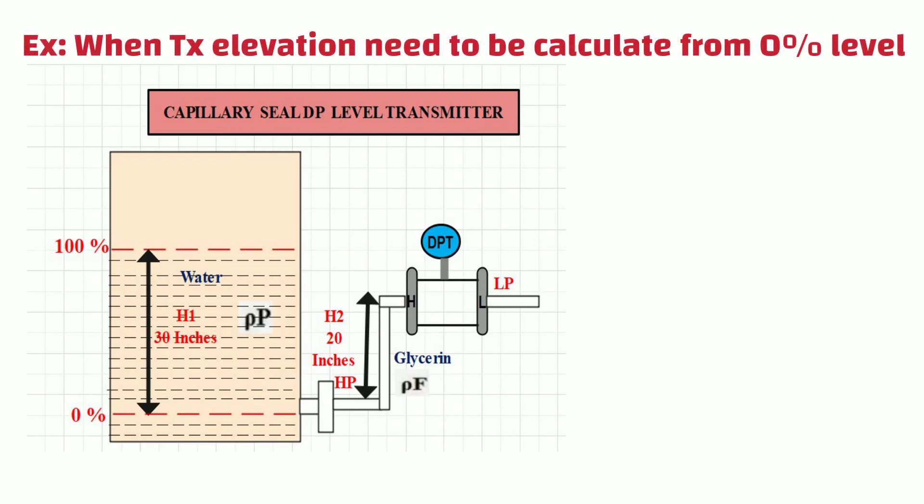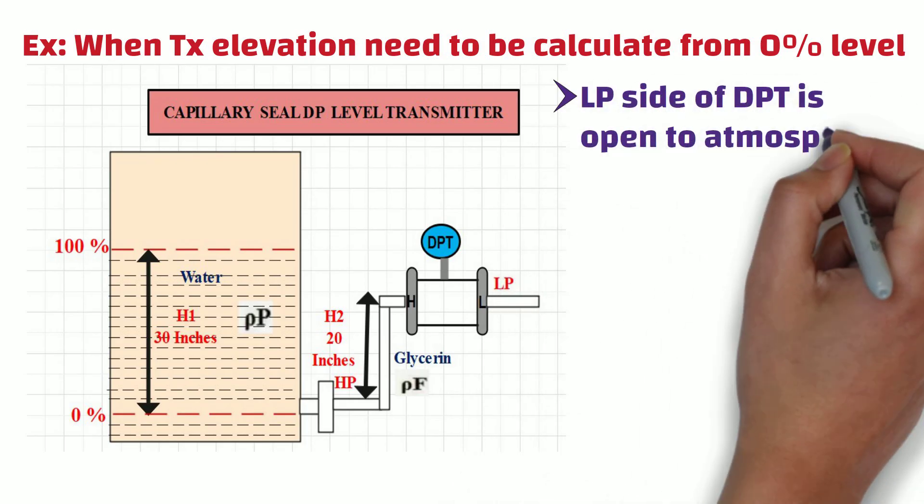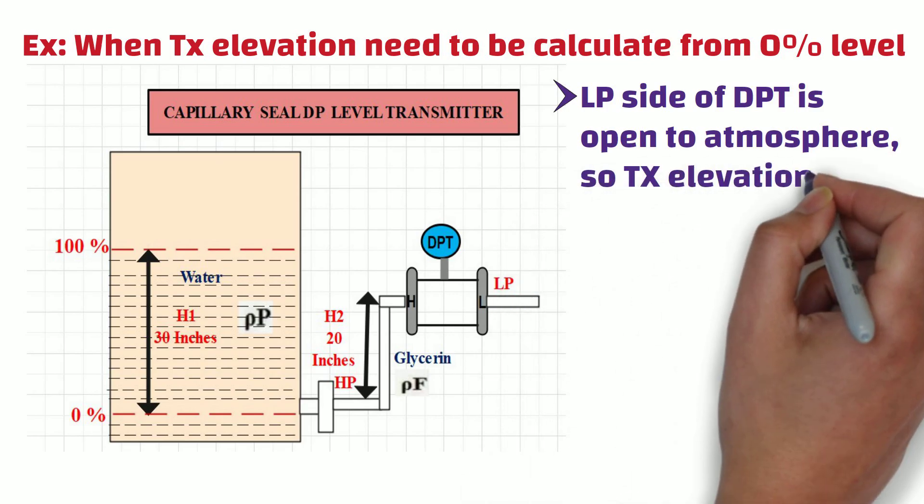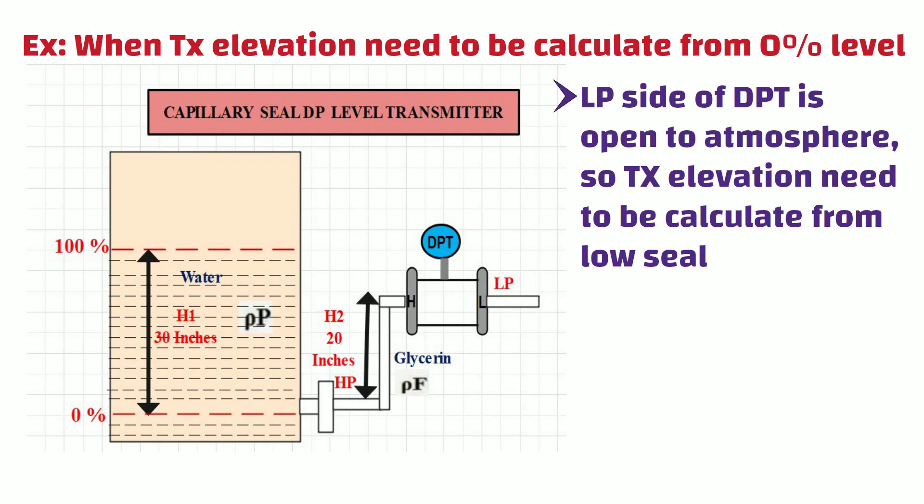However, the transmitter mounting elevation must be considered when one diaphragm is connected to the tank and the other diaphragm is open to atmosphere. As you can see in this example, the low side of the DP transmitter is open to atmosphere. So in this case, we need to calculate the elevation of the transmitter from the low seal when we calculate the calibration range of the DP transmitter.